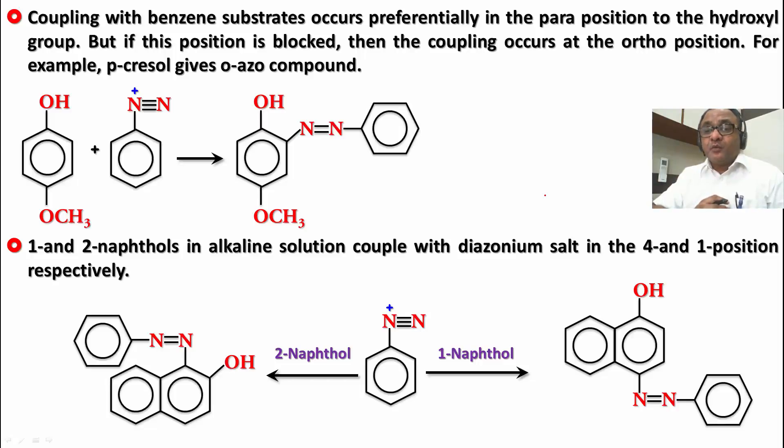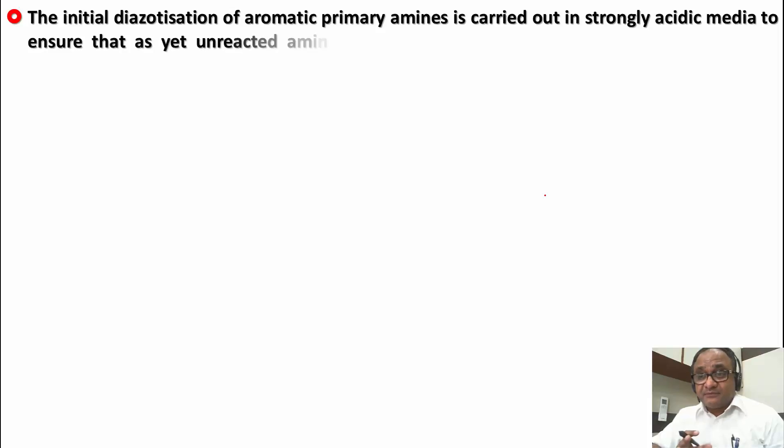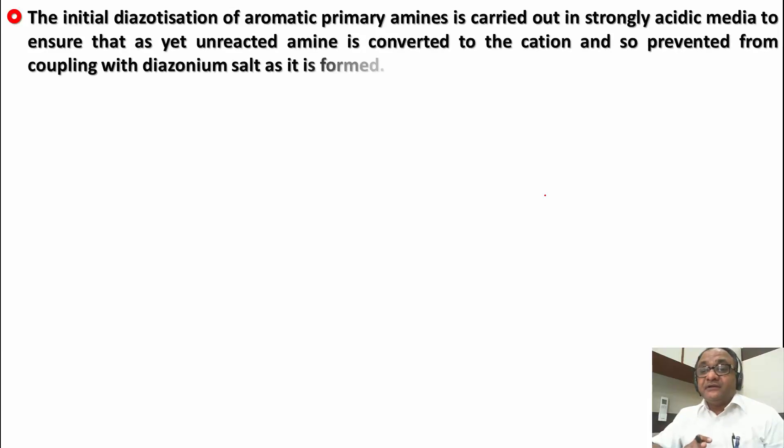When it comes to amines, the story is a little different. Amines themselves are used to make diazonium ions, and they require highly acidic medium to convert into diazonium ions. Highly acidic medium also ensures that any remaining amines have their nitrogen protonated by H+ to form ammonium ions, reducing their reactivity and preventing premature azo coupling. The initial diazotization of aromatic primary amines is thus carried out in strong acidic media. The only way to ensure aniline couples with diazonium ions is in less acidic, slightly basic media.